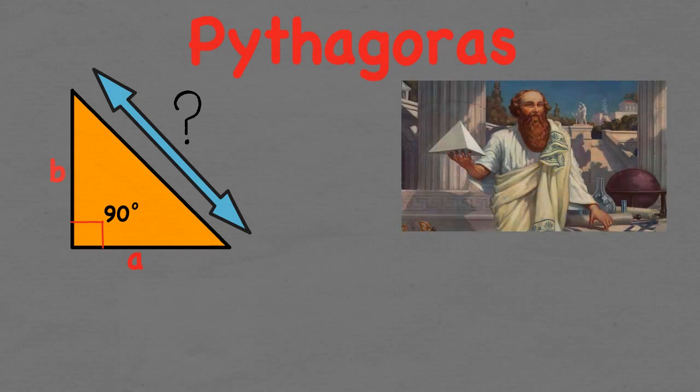About 2,500 years ago a Greek mathematician named Pythagoras, I know what a weird name, discovered a special relationship between the sides of a right angle triangle.